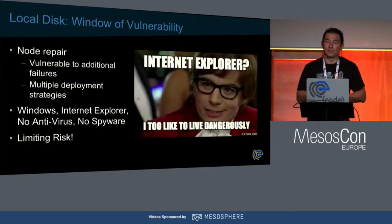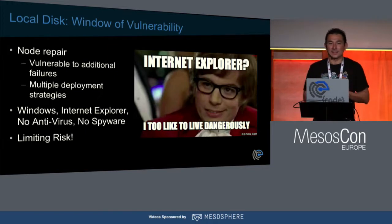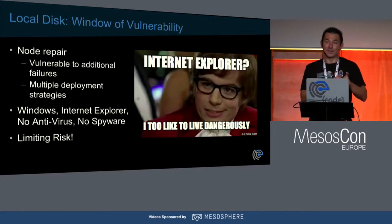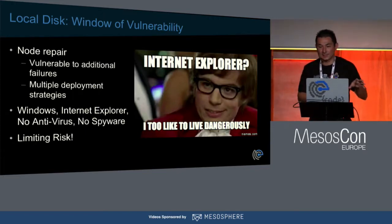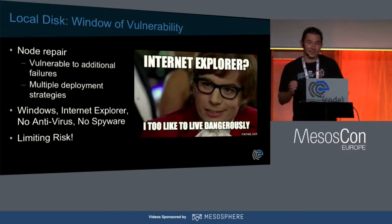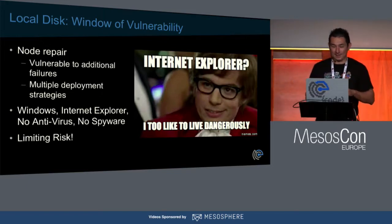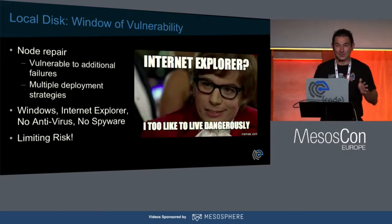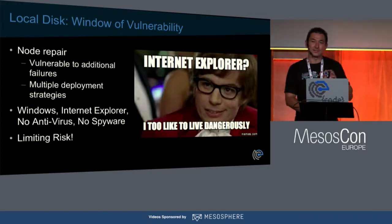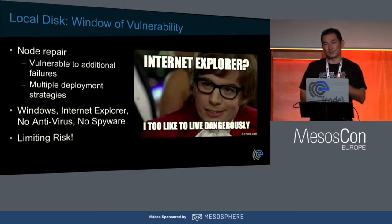With local disk you also have a window of vulnerability. With a three-node Cassandra cluster and one node going out, however long the bootstrap and rebuild takes, if there's another failure on one of the remaining two nodes during that window, you could potentially be losing a lot of data. The idea is to minimize risk — just like you don't want to run Windows with Internet Explorer, no antivirus and no anti-spyware — make sure your data is always available. With local disk, all data is tied to a given node, and migrating to the next node incurs this expensive rebuild time.